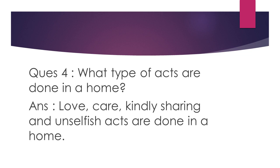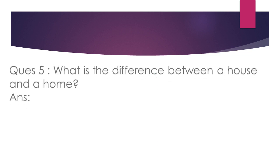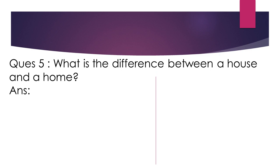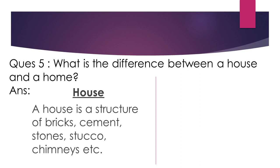Question number five: What is the difference between a house and a home? This was the question I gave you in the last class — I asked you to write the answer in your rough notebook by drawing a line in between, with 'house' on one side and 'home' on the other. A house is a structure of bricks, cement, stones, stucco, chimneys, etc. It is only a structure; no family member lives here.